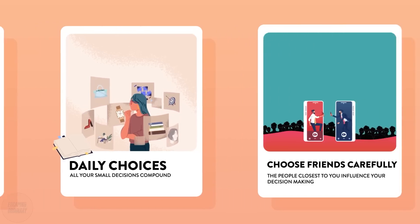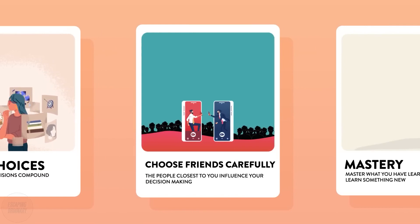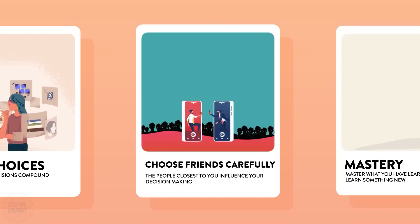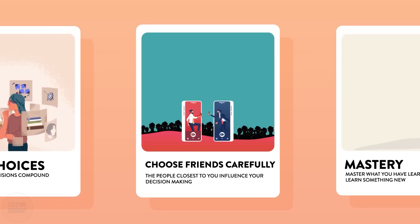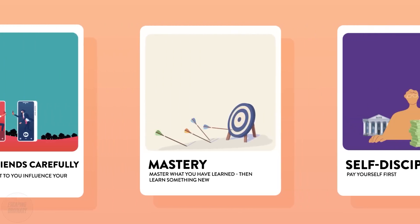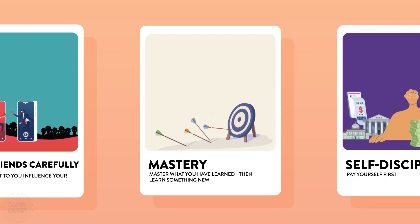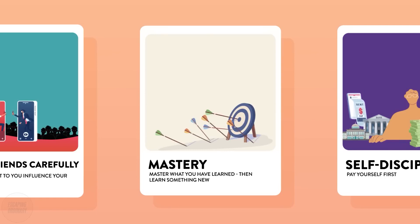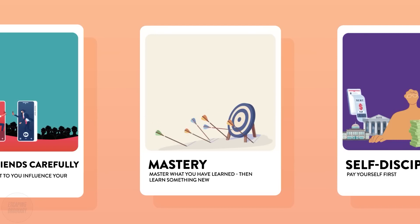Step 3: Choose your friends carefully. Robert warns us not to listen to poor or frightened people — they will tell you all the reasons why what you're doing won't work but have no skin in the game themselves. Choose which people you want to associate with, as they will influence the decisions you make and opportunities you find. Step 4: Master what you've learned, then learn something new. You become what you study — this is the financial version of 'you are what you eat.' In today's fast-paced economy, it is not so much what you know anymore, but how fast you're able to learn new things. There are unlimited ways to make money, but so many believe they can only become an employee to earn it.